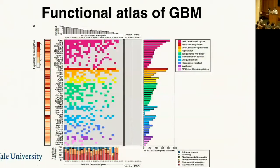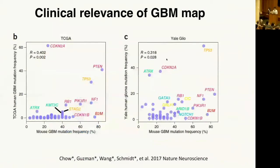We capture-sequenced all targeted loci cut by the guide RNA, which contain insertions, deletions, and splicing-site mutations — just like what you sequence from a patient. We generated a functional atlas of GBM in one shot, comparing it to TCGA data and our Yale Glioma Center patient data, finding significant correlation. There are a few outliers — for example, beta-2-microglobulin is highly mutated in animals but not as highly in patient tumors, though sporadic cases suggest HLA is also mutated in glioblastoma.